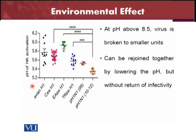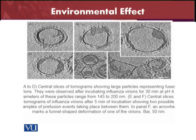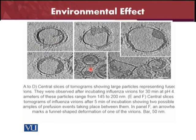Here you can see the pH range for activation, from 5.2 to 6.2. The effect of pH on different virus structures is shown through central slices of electron micrographs showing large particles representing fused virions observed at different pH levels and different sizes. You can see that after 30 minutes at pH 4.9, virions have reduced in size to between 1.45 and 200 nanometers. These represent different sizes.